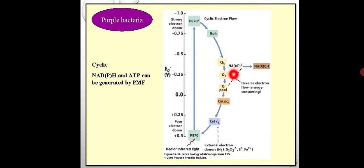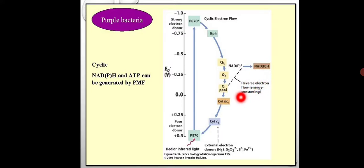To reduce NAD to NADPH, it needs electrons. Electrons are provided from the quinone pool, which is the storage house of electrons. Quinone molecules are mobile carrier molecules, so they can transport or reverse back the electron to NAD+. As NAD+ accepts the electron, it gets reduced to NADPH or NADH. This is the reverse electron flow, and we can store energy in the form of NADH.